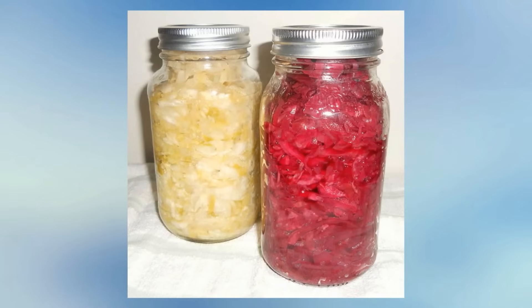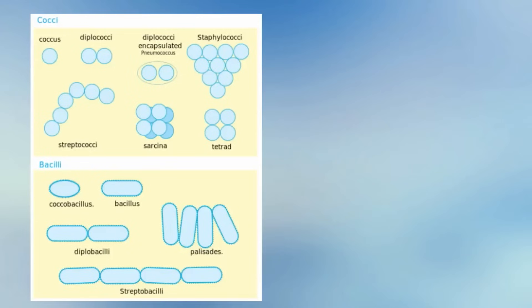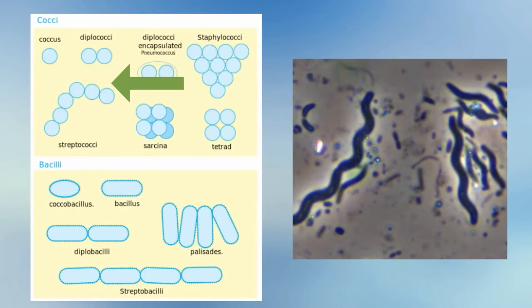Bacteria can be classified by their shape. For instance, Coccus has a sphere shape, Spirillum has a spiral shape, and Bacillus has a rod shape.